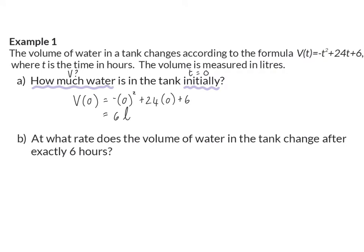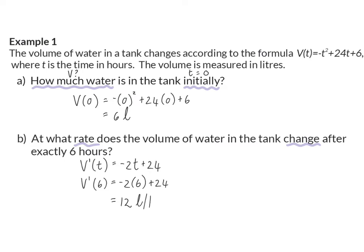Question B: At what rate does the volume of water in the tank change after exactly six hours? The rate of change is always the first derivative, so here we are going to start off by calculating the derivative of the given formula, and that would be minus 2t plus 24. The question asks for the rate of change after six hours, so t will be changed to six. Here we get a value of 12, and since this is about the rate at which the volume changes, that will be in liters per hour.